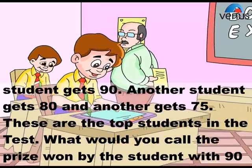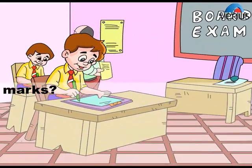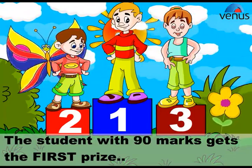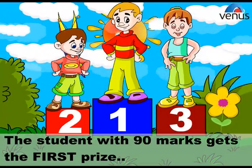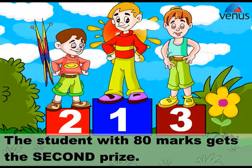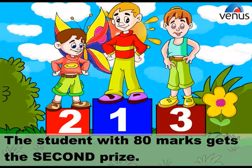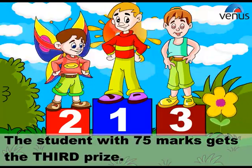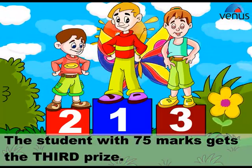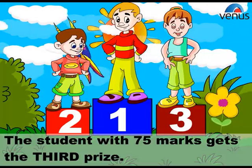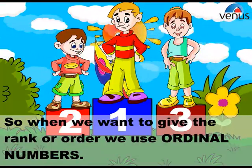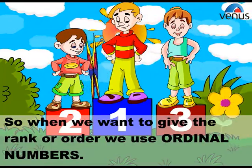What would you call the prize won by the student with 90 marks? The student with 90 marks gets the first prize. The student with 80 marks gets the second prize. The student with 75 marks gets the third prize.